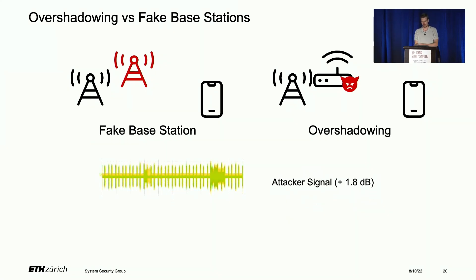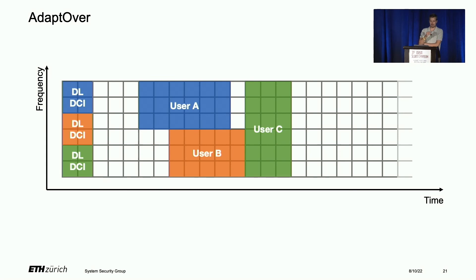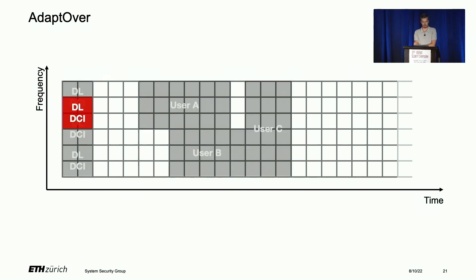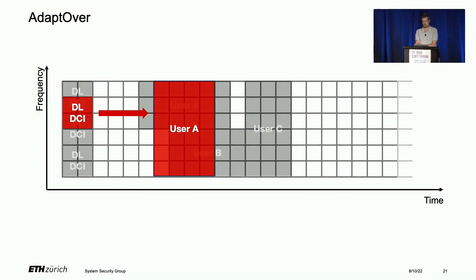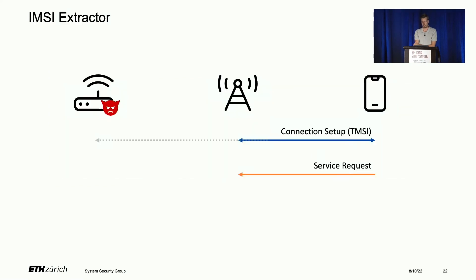We call our system ARAPOVER. What happens in the resource grid on downlink is we overshadow the DCI with our malicious DCI, which then points to malicious user data. At the protocol level, during normal connection setup, the phone sends connection information with the TMSI, then sends a service request, and the base station replies with a security mode command. We overshadow this message with an identity request, which asks the phone for its IMSI. The phone then happily answers with its IMSI number sent in plaintext, which we can sniff using our sniffer.